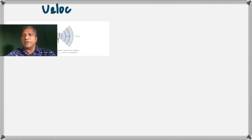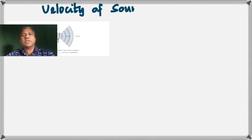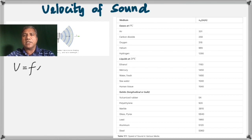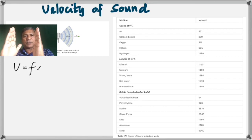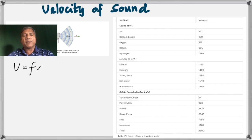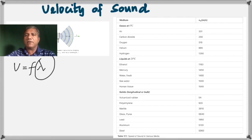The velocity of sound is the product of the frequency and the wavelength. The wavelength, as shown in this diagram, is the distance from one compression to the next compression — from the center of one compression to the center of the next. The symbol for wavelength is lambda, F is the frequency, and velocity equals frequency times wavelength.